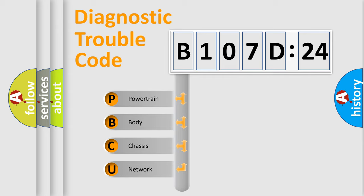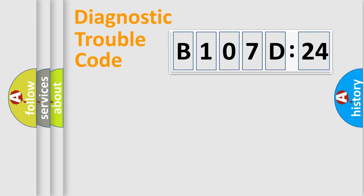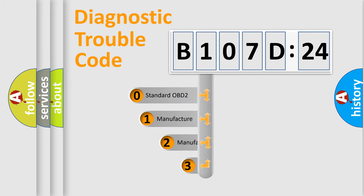We divide the electric system of automobile into four basic units: Powertrain, Body, Chassis, and Network. This distribution is defined in the first character code.